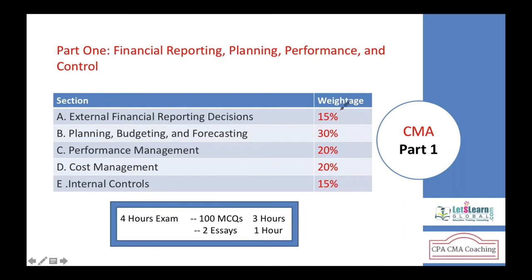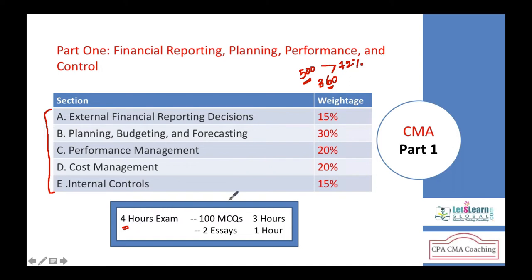In total we have five sections with the weightage as described. The total marks per part is 500, and you need to score 360 out of 500, which is 72%. The exam is four hours: the first three hours consist of 100 multiple choice questions with four answer choices — A, B, C and D. Once you complete the three-hour MCQ section, you are moved to the fourth hour, which is the essay exam.